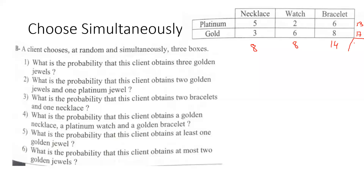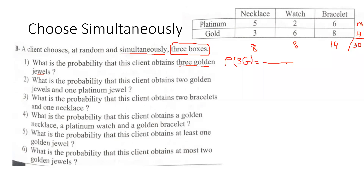So in this part, or in this example, we have to choose simultaneously — at the same time, together as a group. A client chooses at random and simultaneously three boxes. What is the probability that this client obtains three golden jewels?